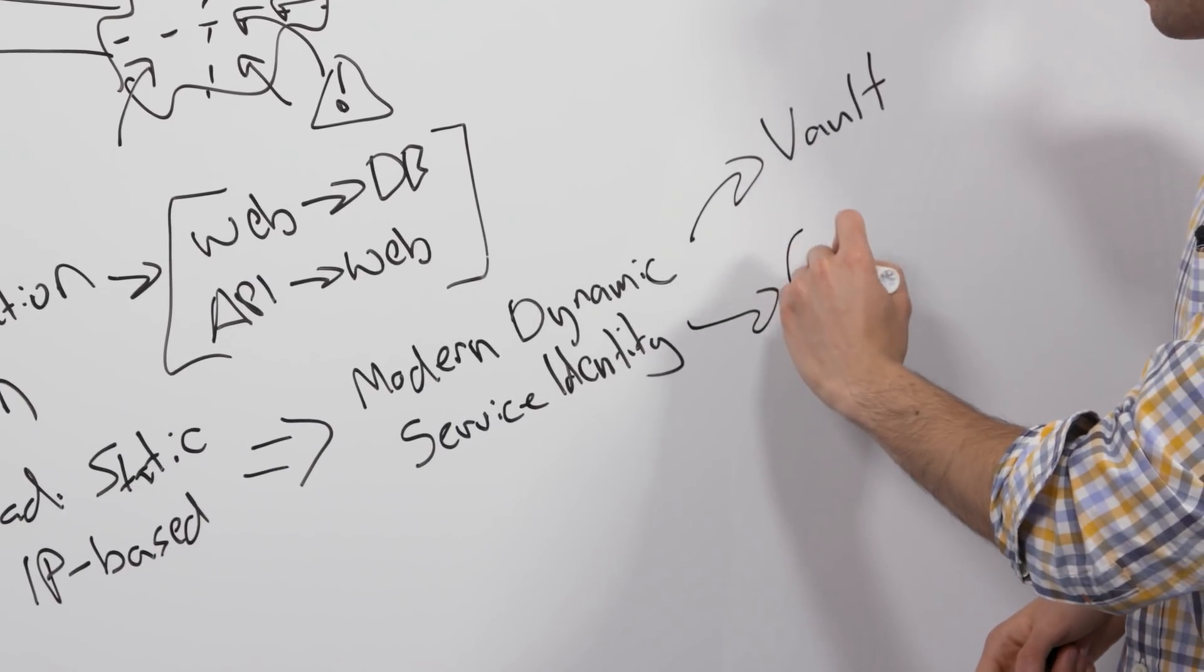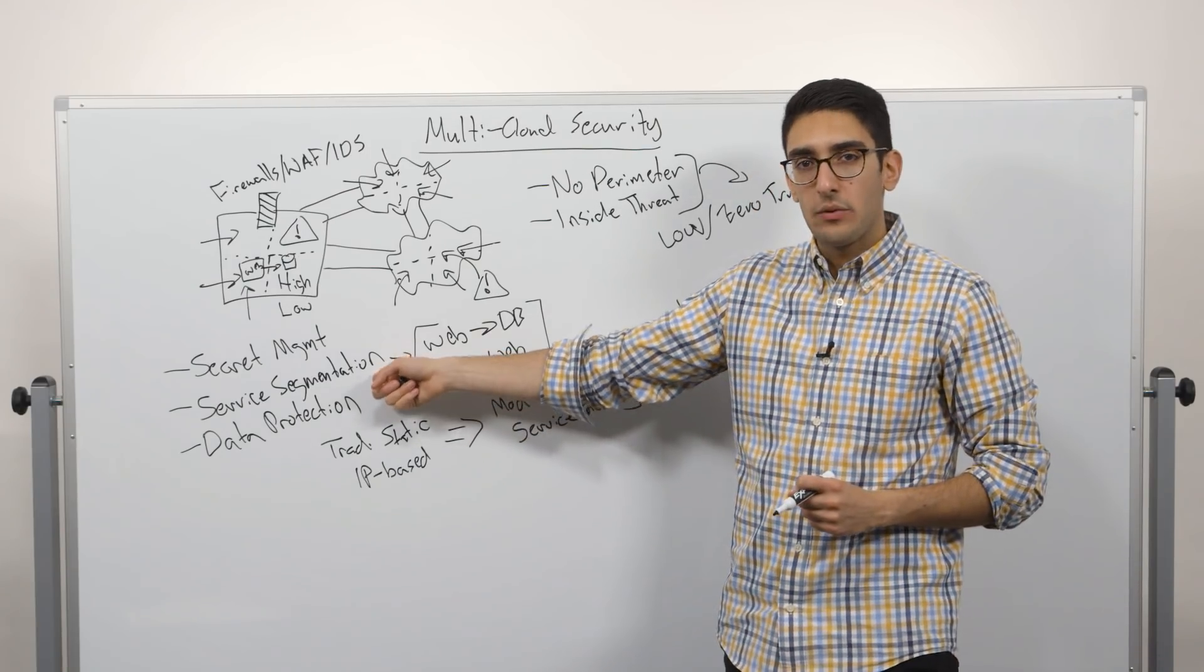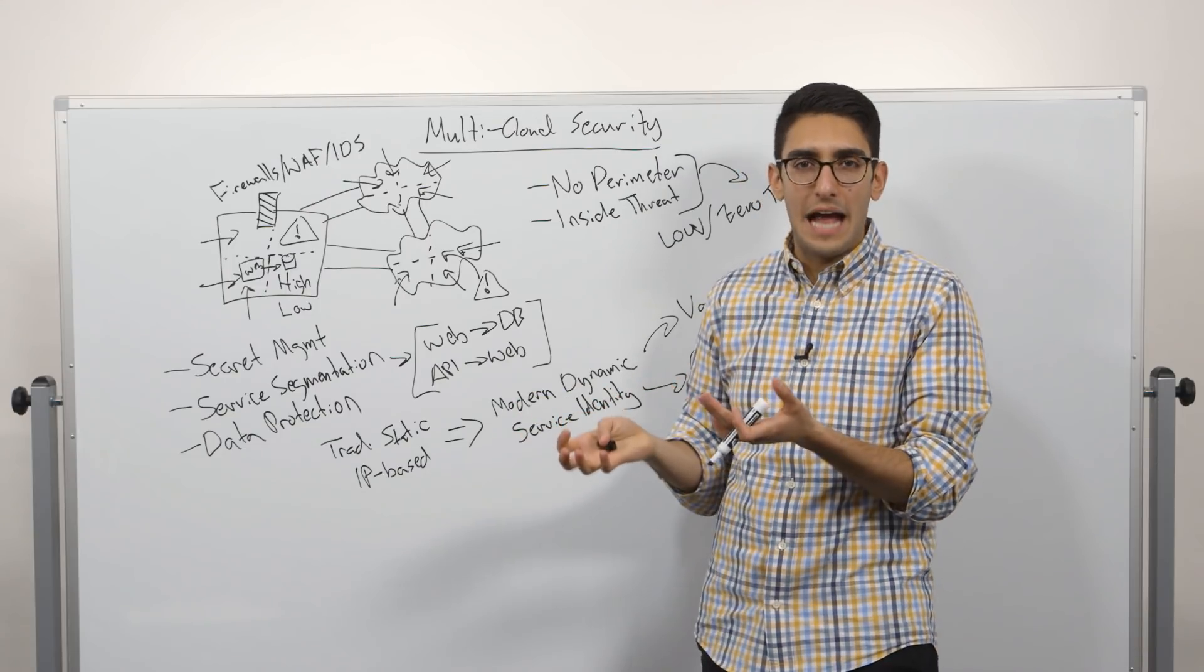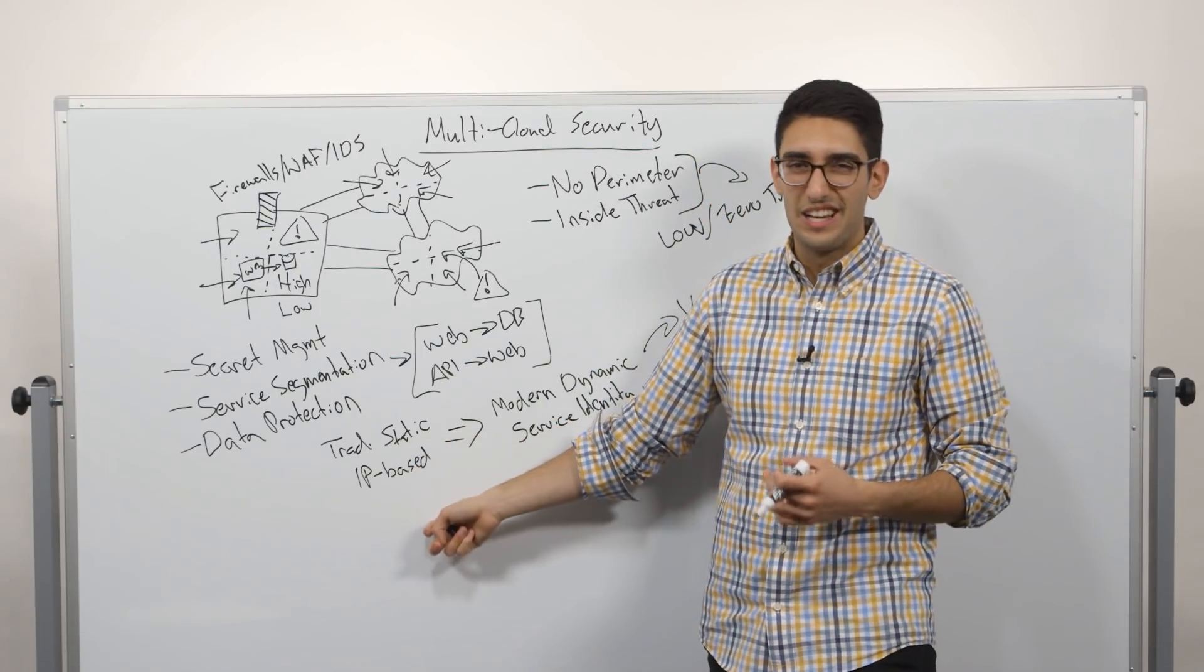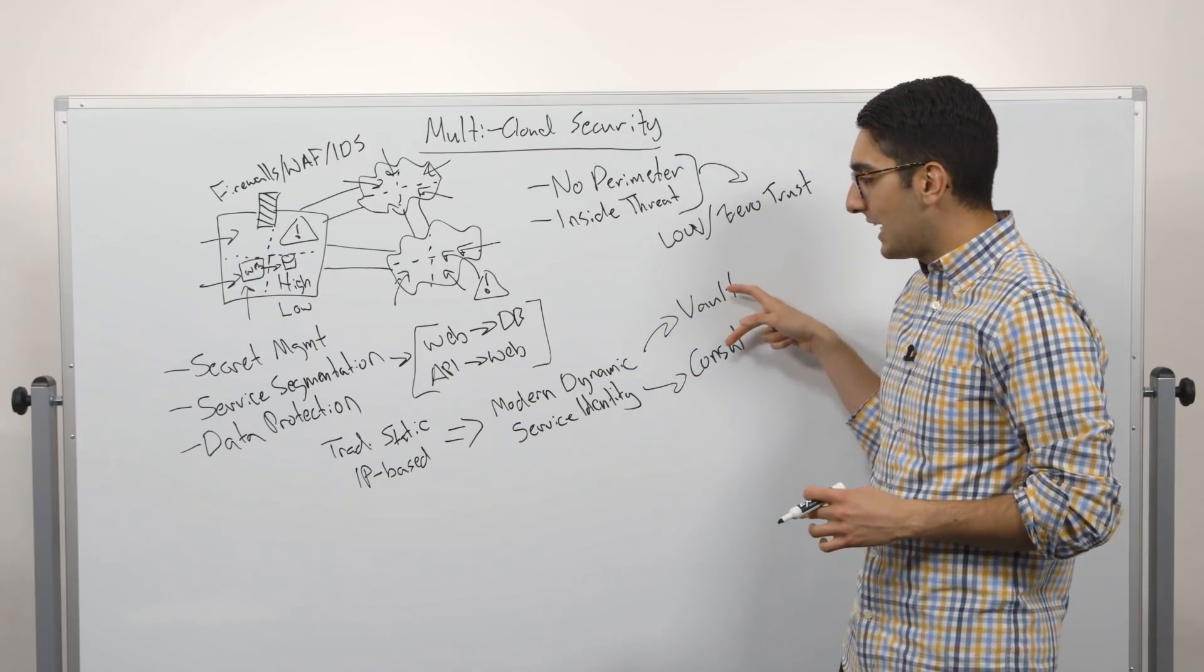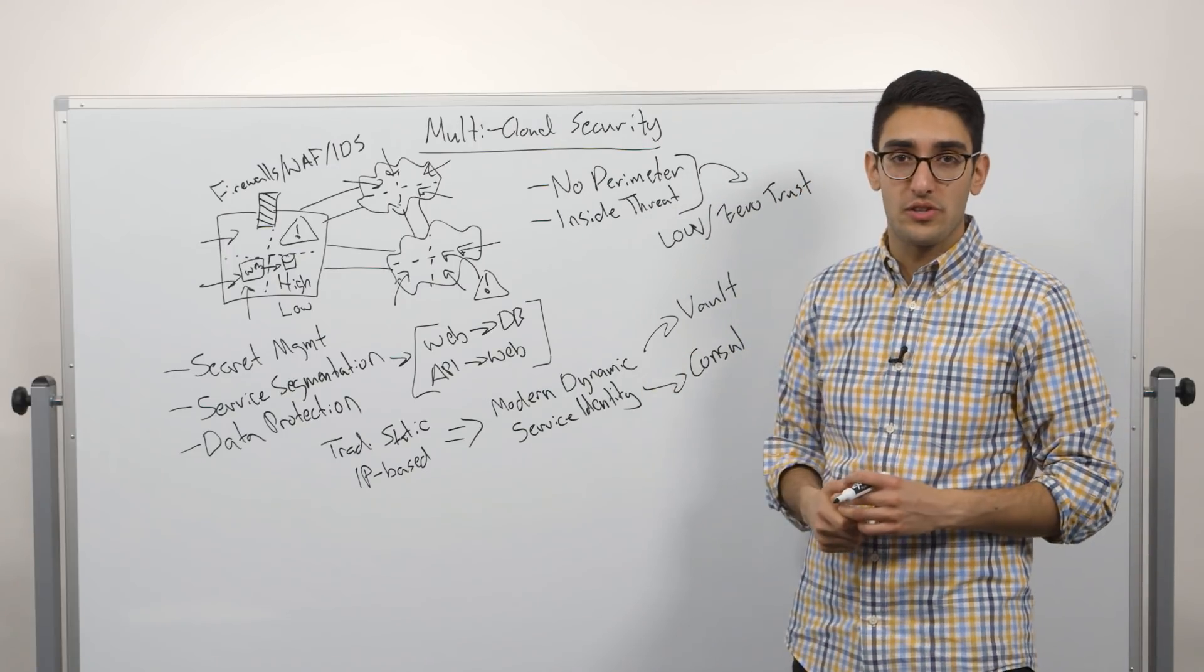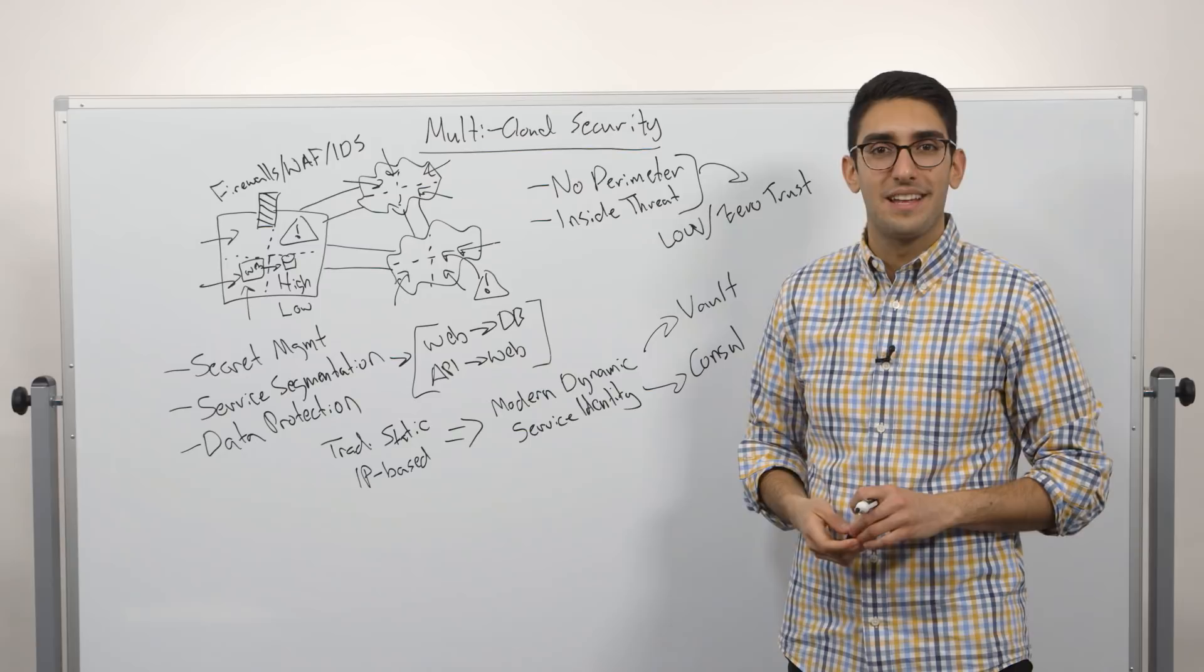The other tool is Consul. And Consul is our service mesh tool. And it really looks at how do we do the service segmentation? How do we allow a networking or firewall team to define these high level rules, and then decouple that from application and operations teams who are deploying applications, but don't want to be sort of bound to rigid process or rigid IP based controls that takes days, weeks, months to make changes to. So these are two key areas. I hope this is a useful high level introduction into the challenges of multi-cloud security. I would encourage you if you're interested to check out our online resources and learn more about Vault for any of those challenges or check out our online resources and learn more about Consul. Thanks so much.